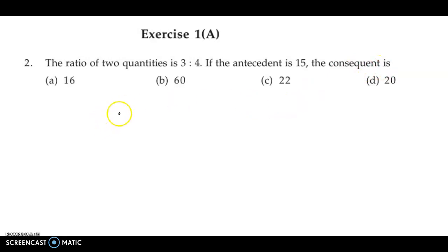Now suppose the two quantities are A and B. And we have been given that the ratio of A and B is 3 to 4. Further, if the antecedent is 15.